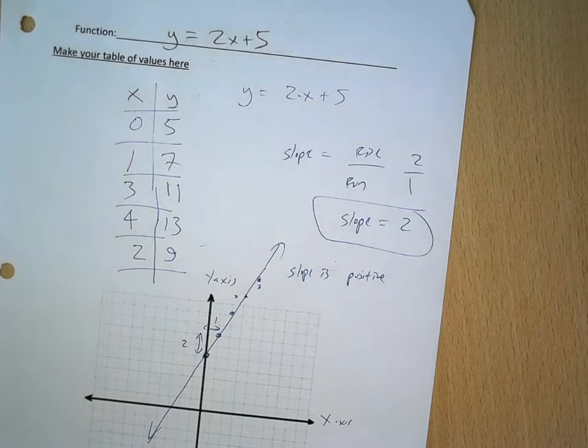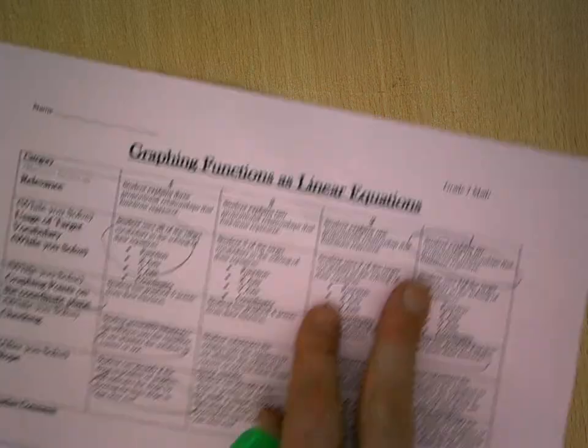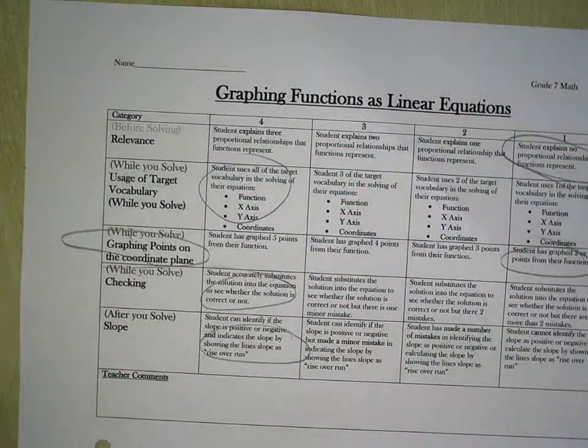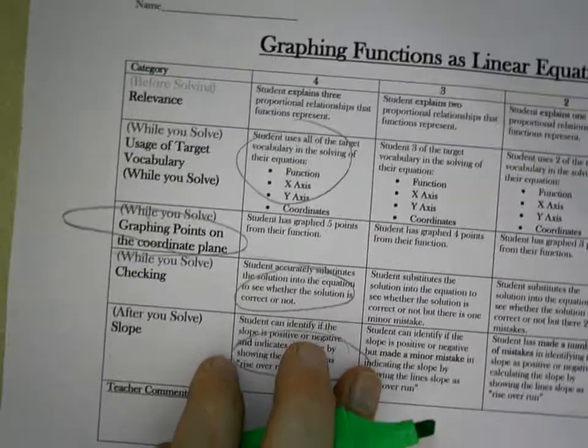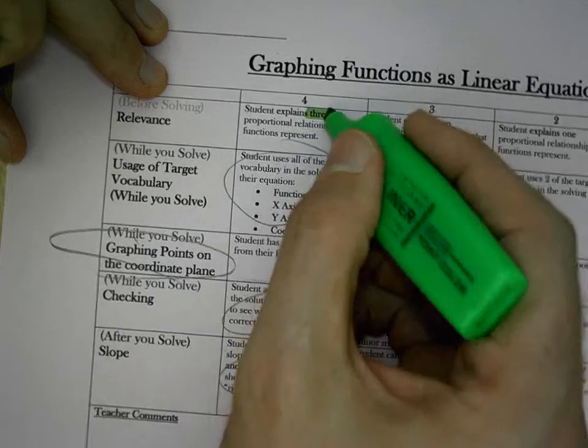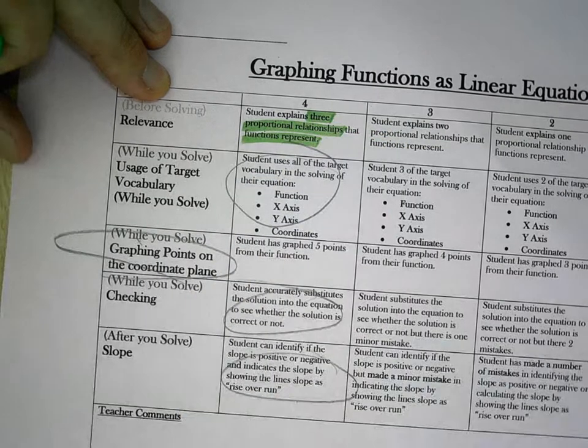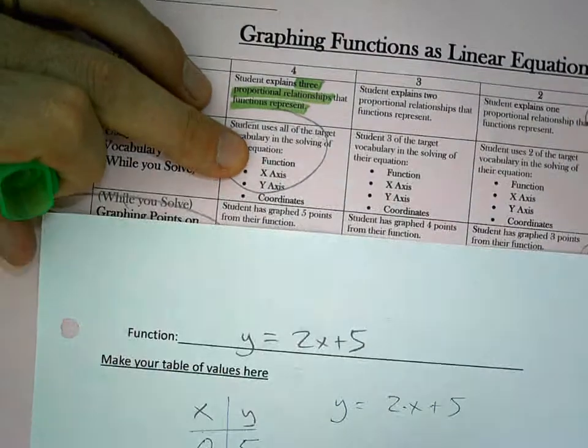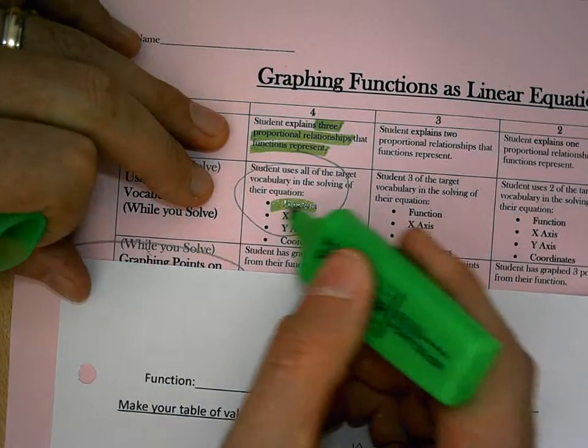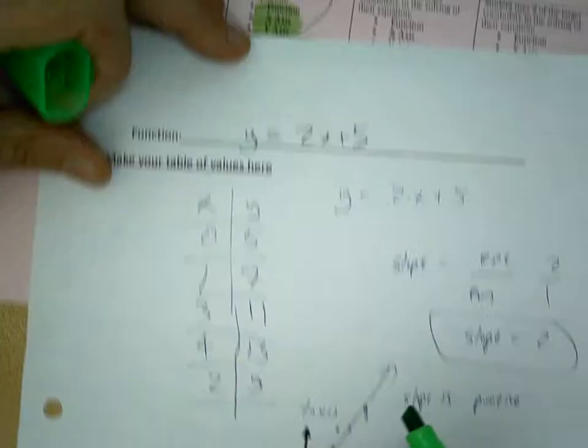So I'm kind of just evaluating myself on this. I started by explaining three different ways that functions were used. And so I explained those three proportional relationships. I mentioned function. I labeled x-axis, y-axis, and coordinates here. So I've done all those.